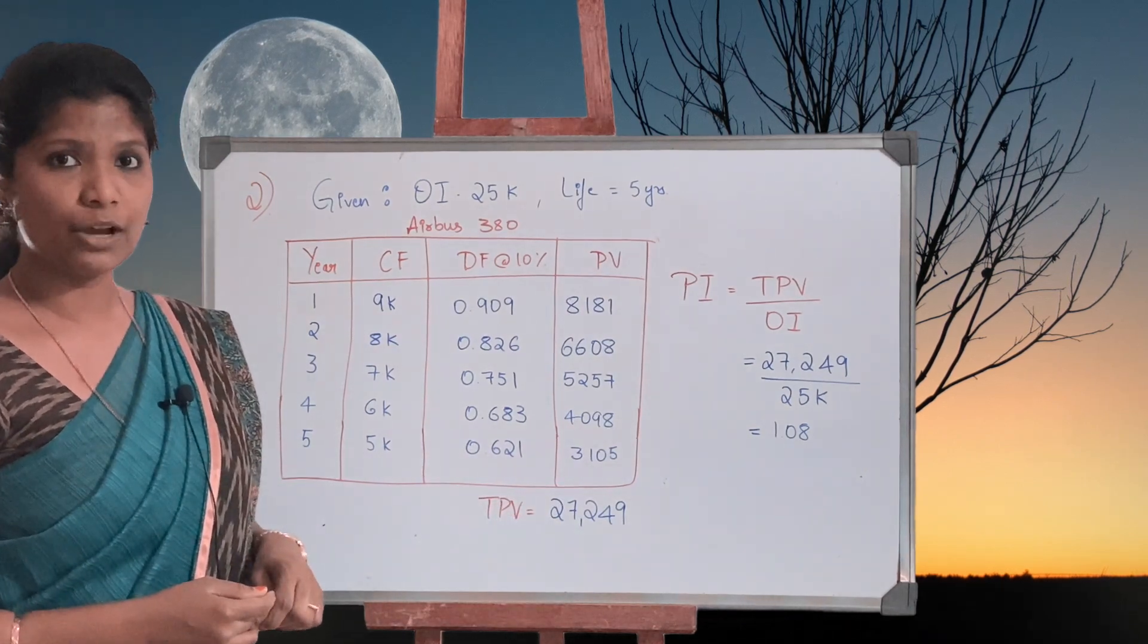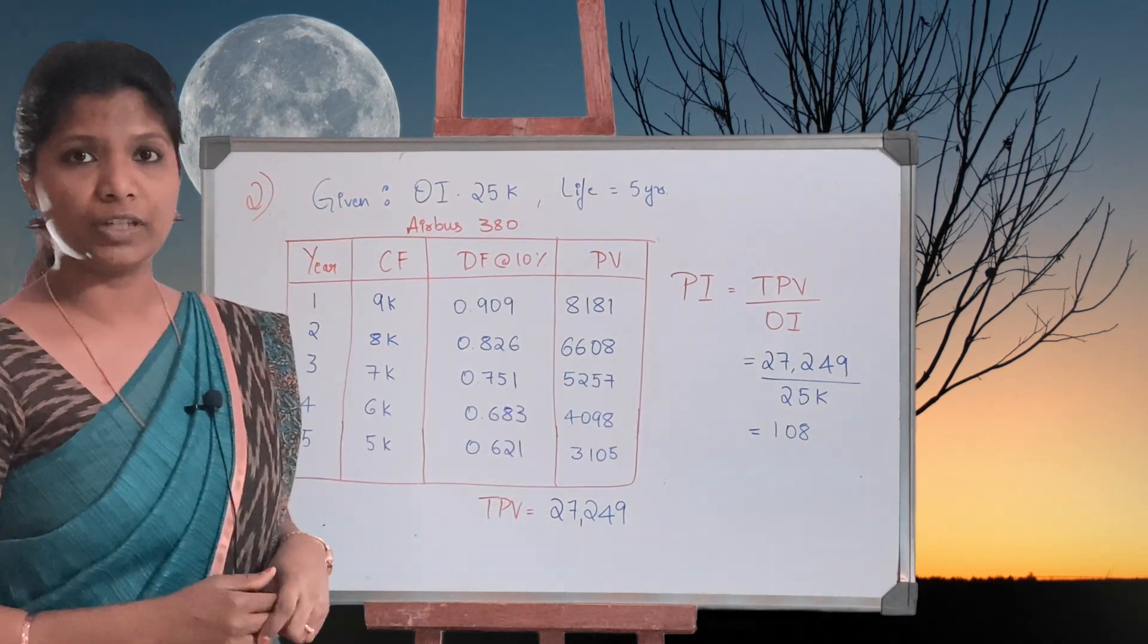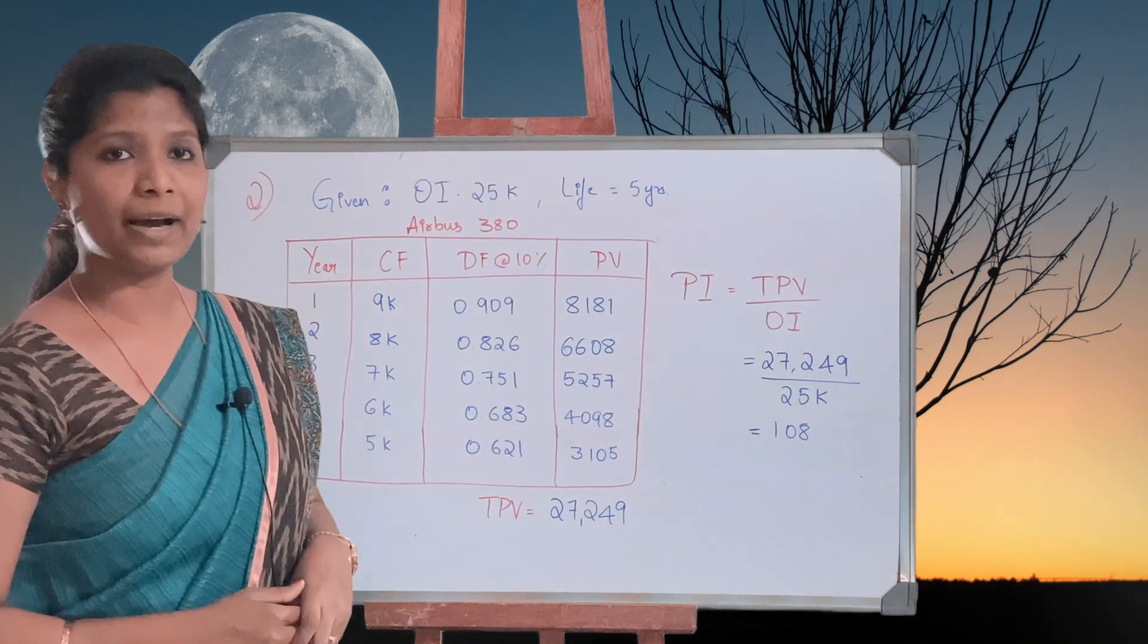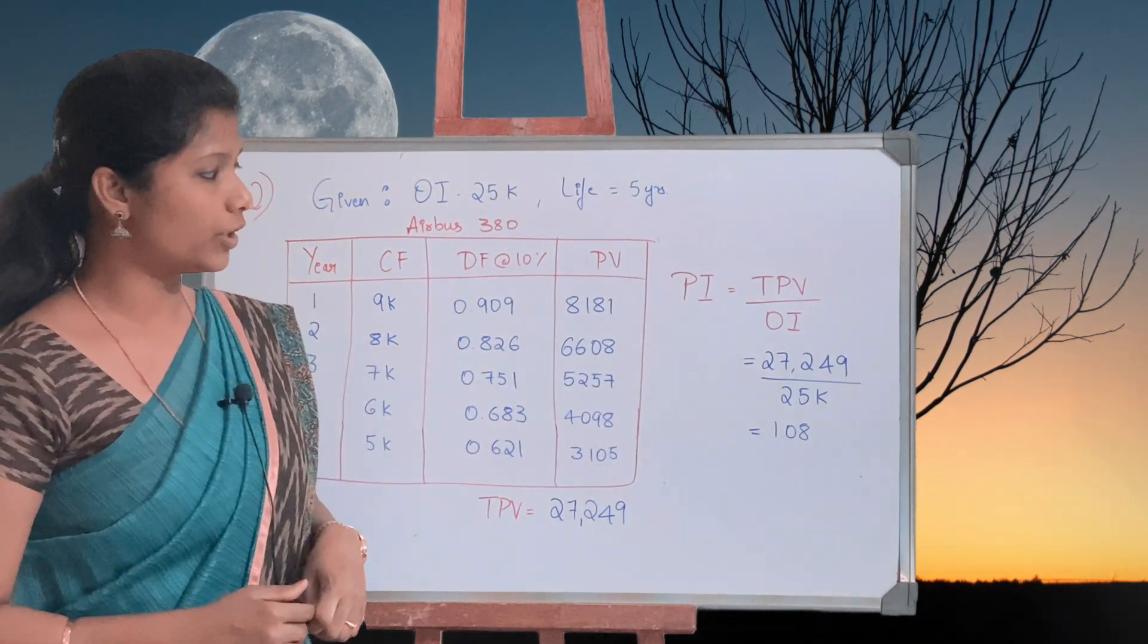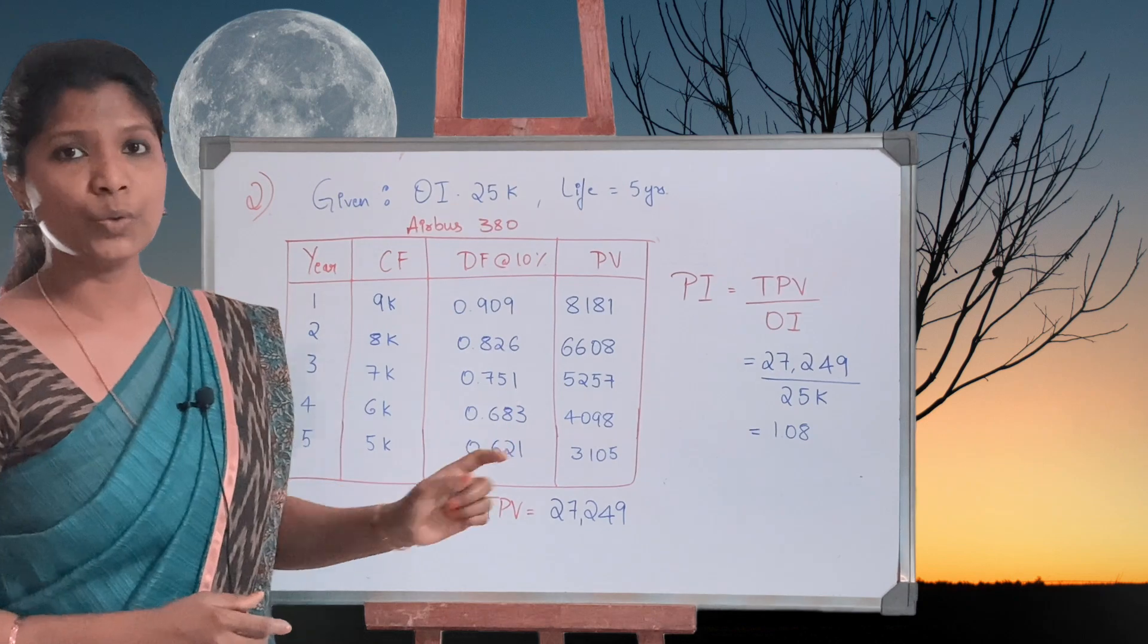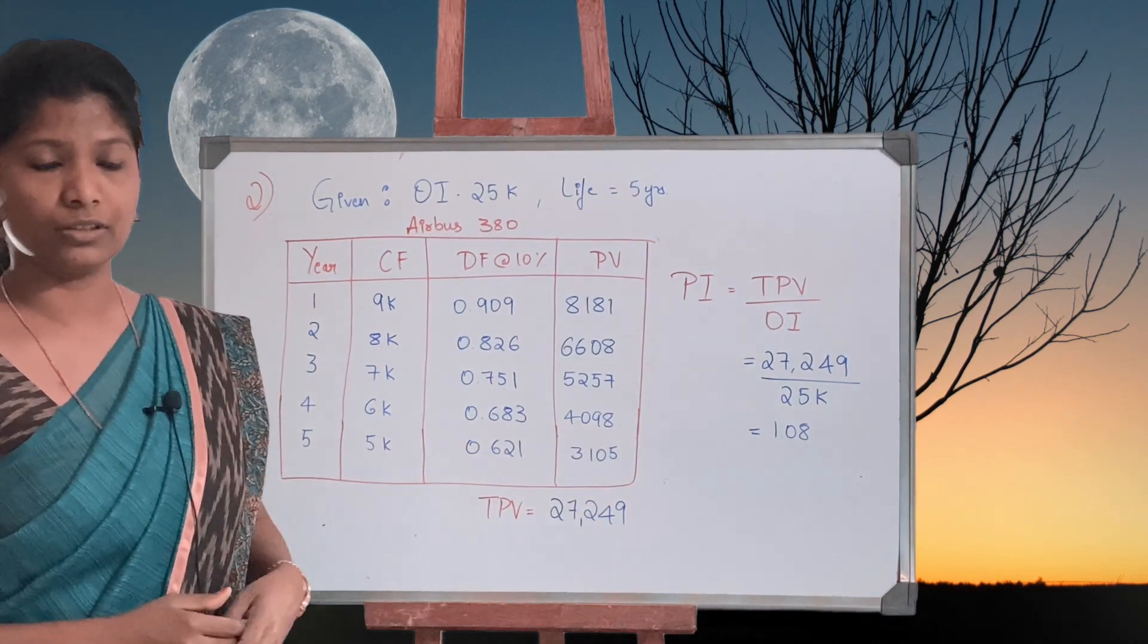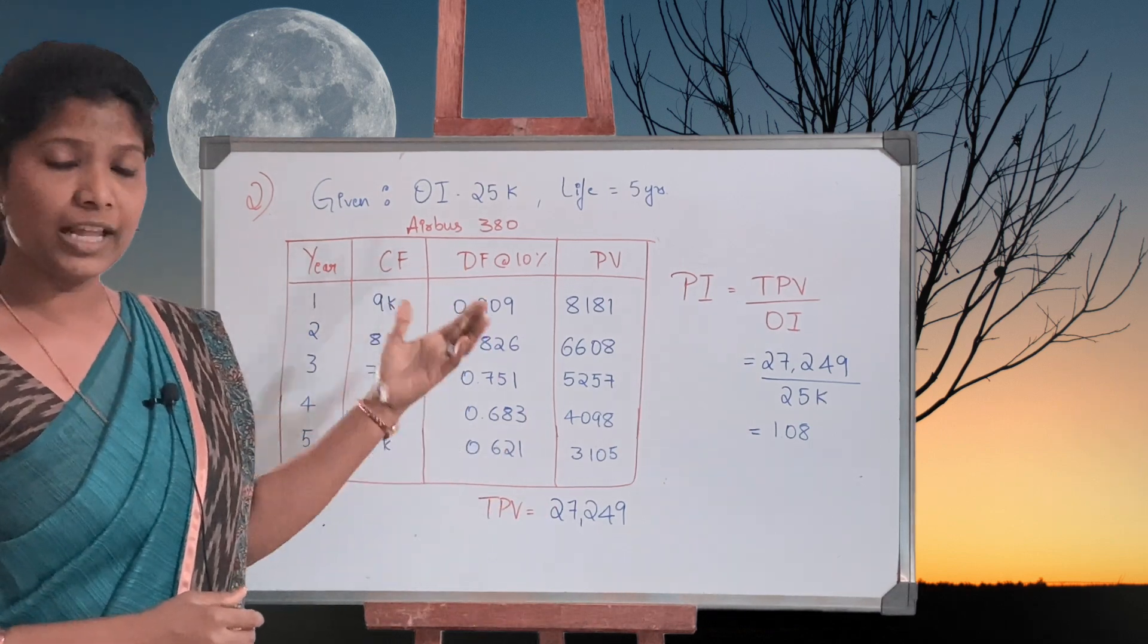The total comes up to 27,249 rupees. So this we are going to implement in the Profitability Index formula: total present value divided by original investment, that is 27,249 divided by 25,000. The answer is 1.08.